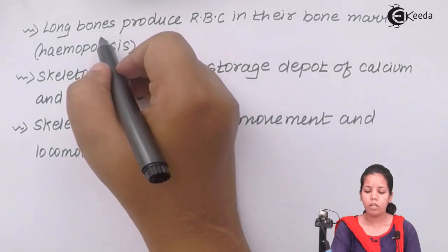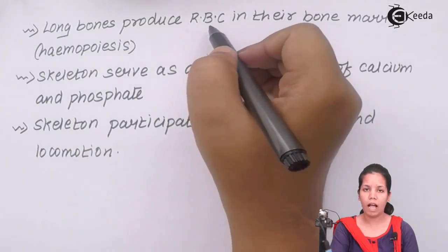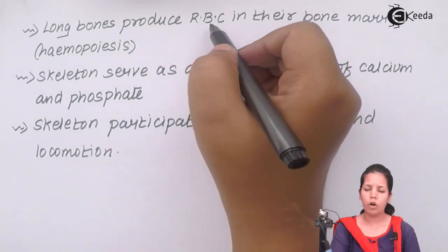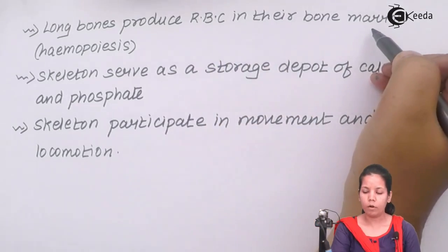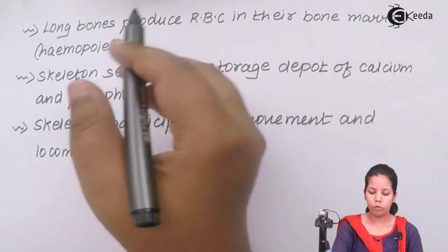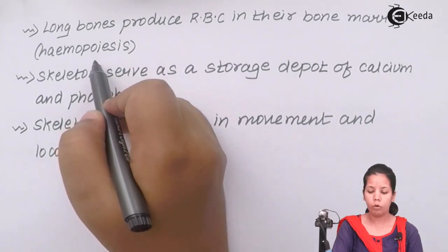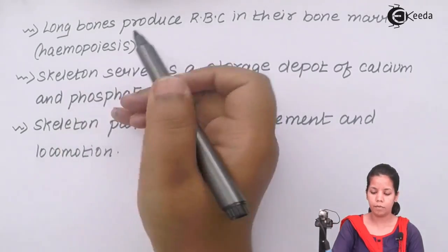If we talk about the long bones of the skeletal system, they basically produce RBCs or red blood cells in the bone marrow. Bone marrow is the place where RBCs are generated through the process of hemopoiesis. Remember the process of hemopoiesis.